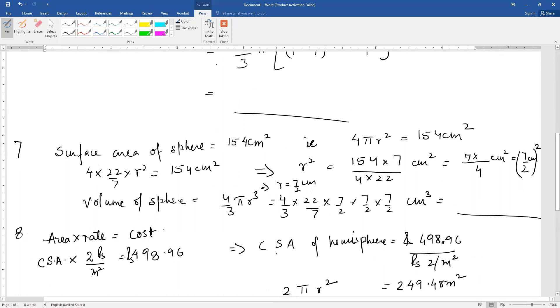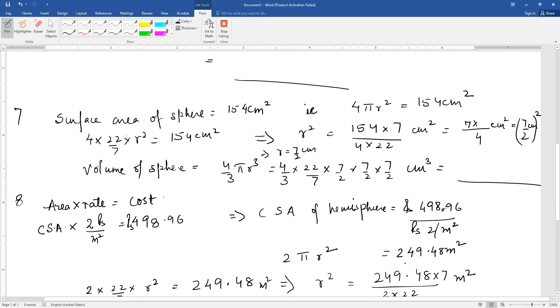You get the curved surface area of the hemisphere as 249.48 meter square when we divide 498.96 by 2. Rupees cancel and meter square comes to numerator. Curved surface area of hemisphere is 2π r².